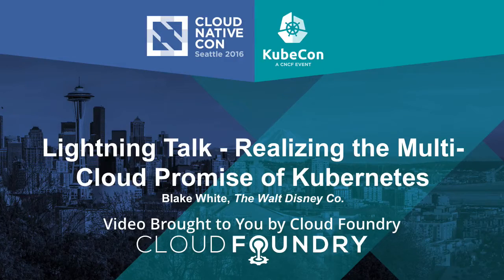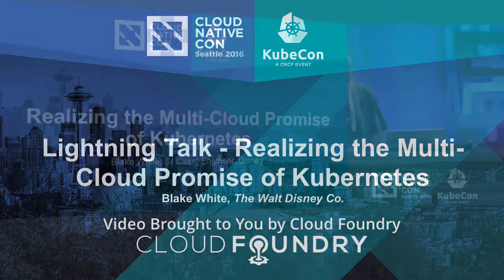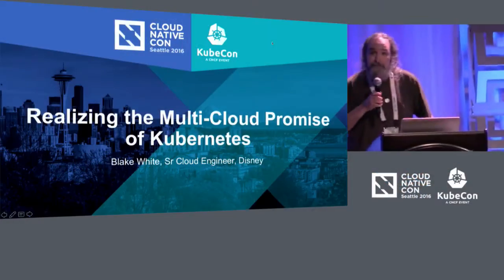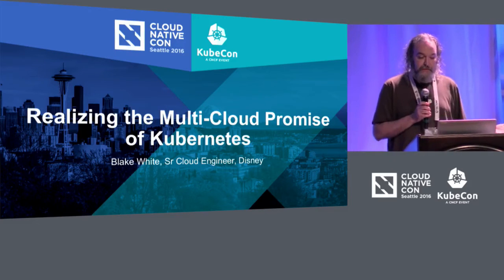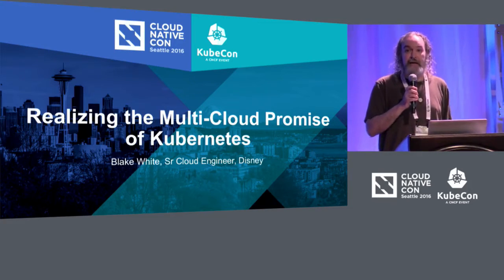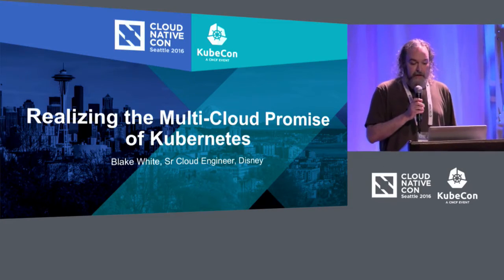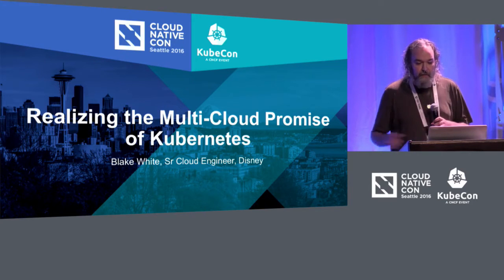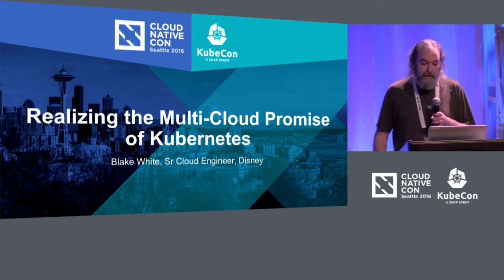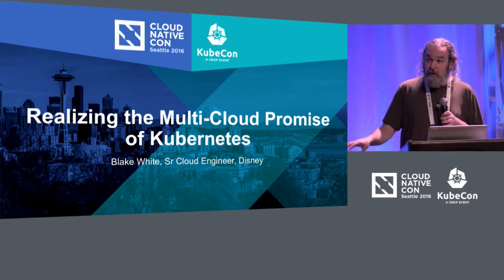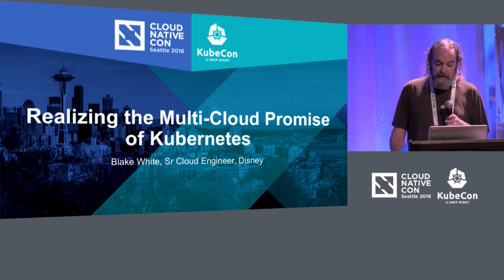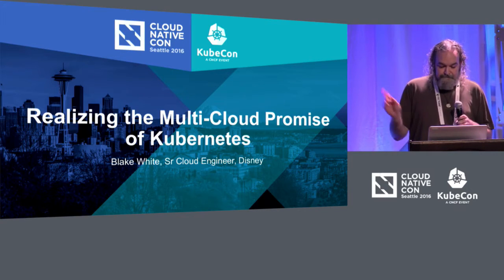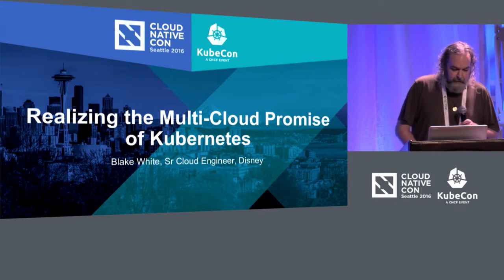Hello, my name is Blake White and I work at the Walt Disney Company with our cloud architecture team. One of Disney's core principles is making magic happen — sometimes it's easy, sometimes it's not. We've been exploring Kubernetes for most of the last year in our own OpenStack environment, Google's cloud, and in AWS. Here are some of the things we've learned.